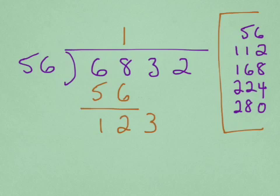So I'm looking at 56s into 123. Looking over there, it's going to be twice, so 112 goes into it. And I put the 112 down below, and then do my subtraction.